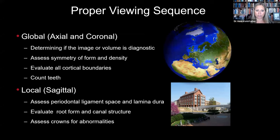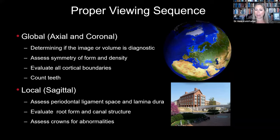With proper viewing sequence, look at things globally. Many times when we take a CBCT, we are interested in one specific area and it is easy to go to that area and forget to look at the entire volume. But the entire volume needs to be evaluated. Globally, we tend to go through things in the axial and coronal sections. We can compare different sides and look at symmetry, and we want to determine if your image is diagnostic.